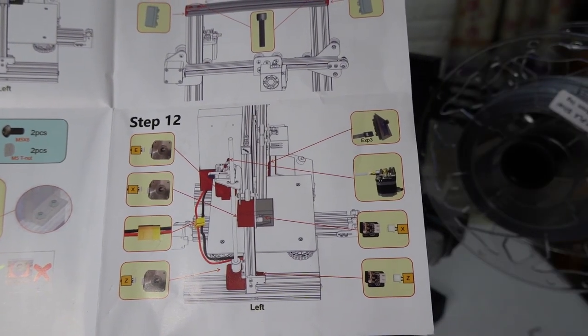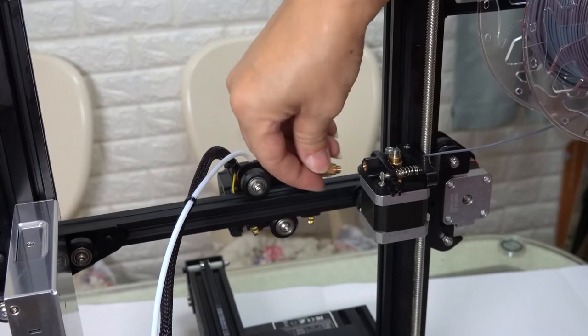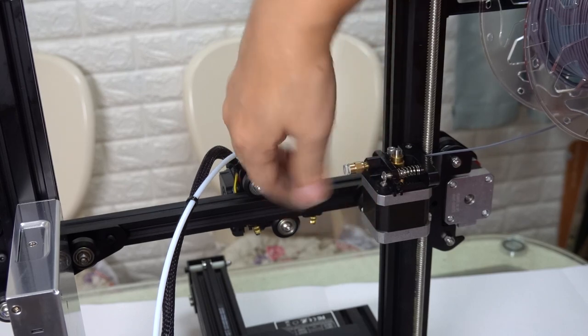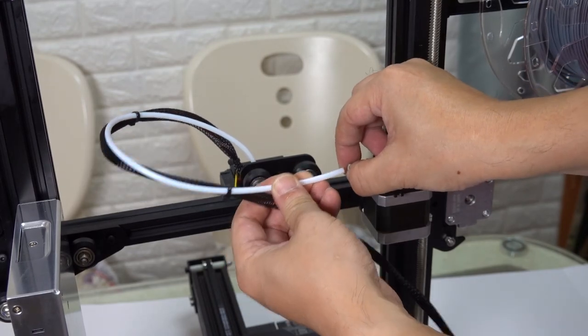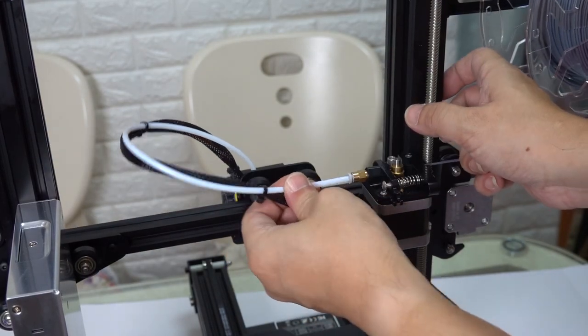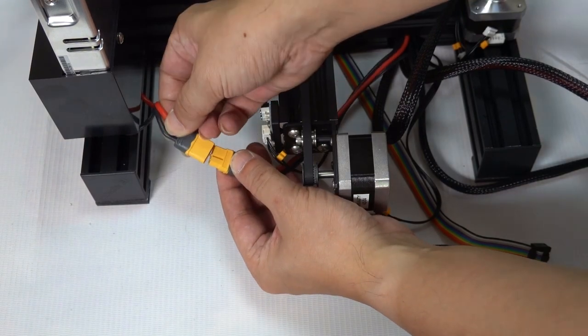The 12th step is all about connecting, including twisting the pneumatic adapter into the extruder. Then insert the white tube into the pneumatic adapter. Wire connection includes transformer output.